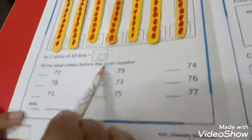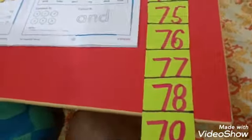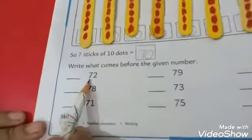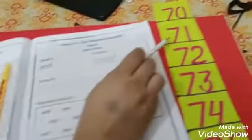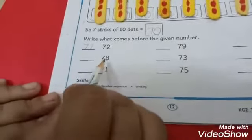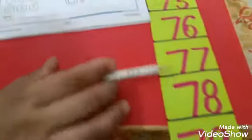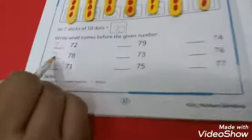Write what comes before the given number. ये कुछ numbers हैं इनके before बताने हमने। तो मैंने यह 72, 79 strip तैयार करी है। तो first number is 78. Which number comes before 78? See this is 78. Before it is 77. We will write here 77.